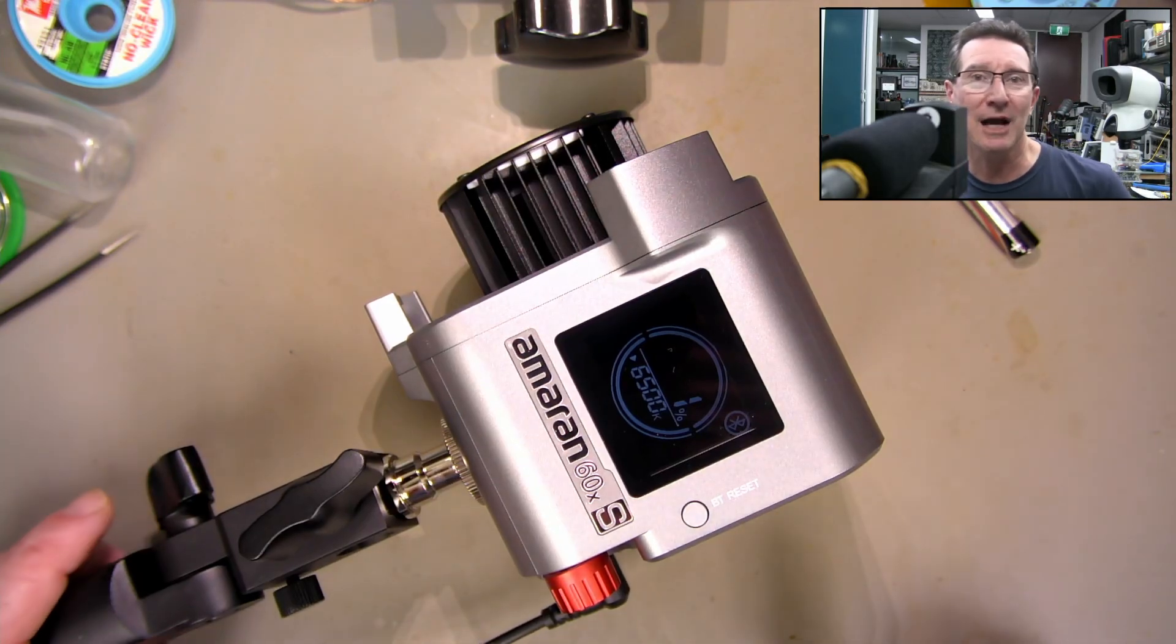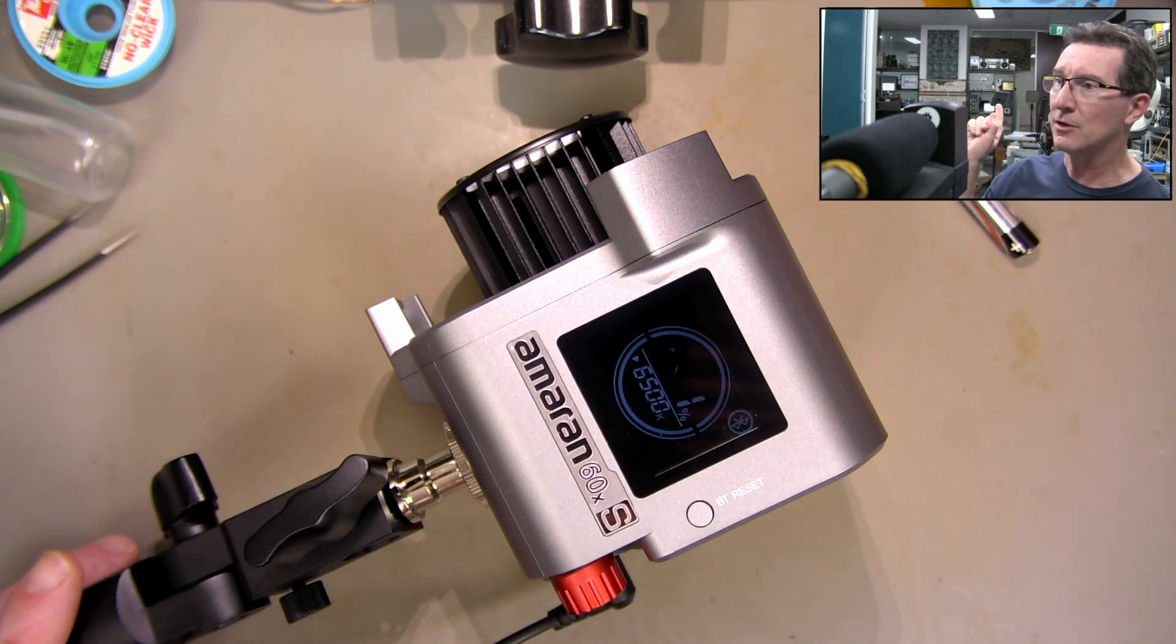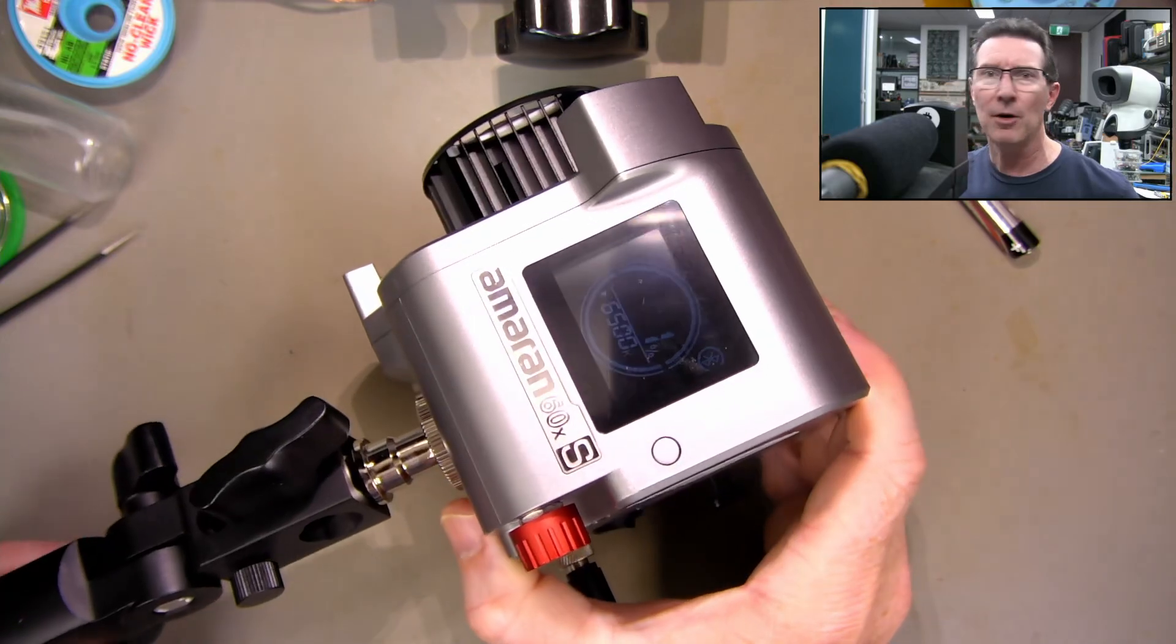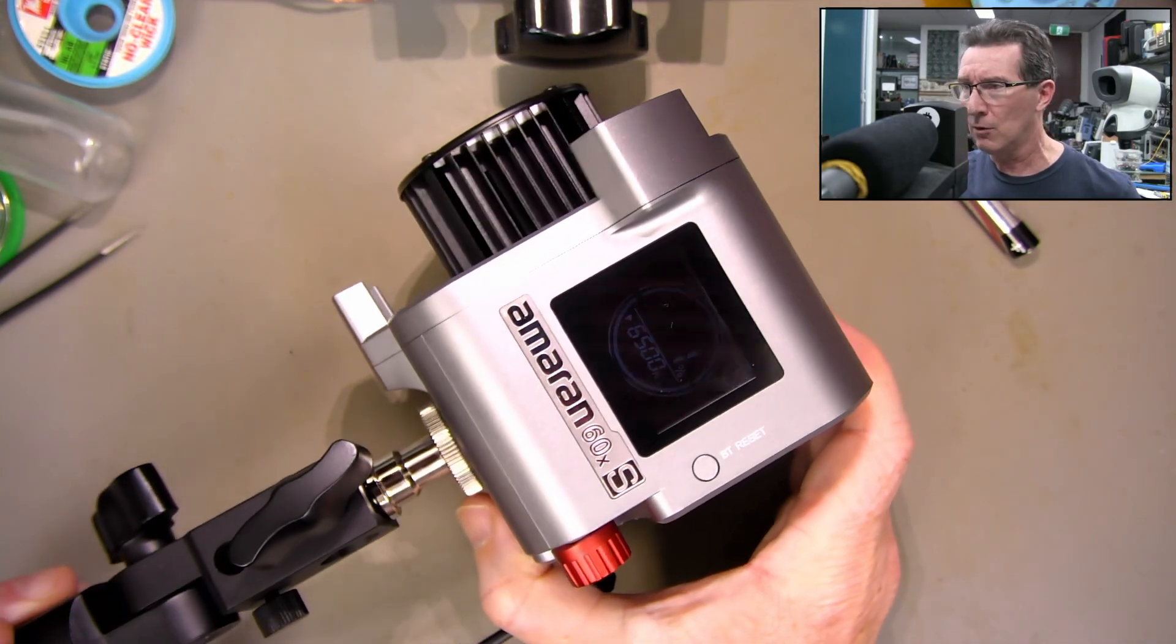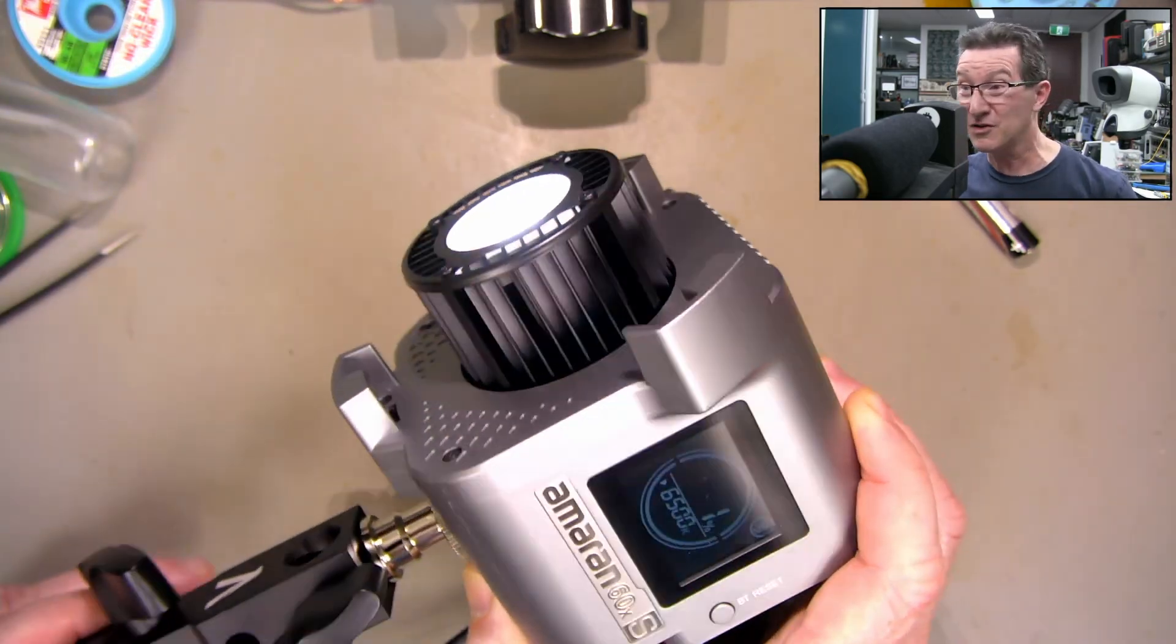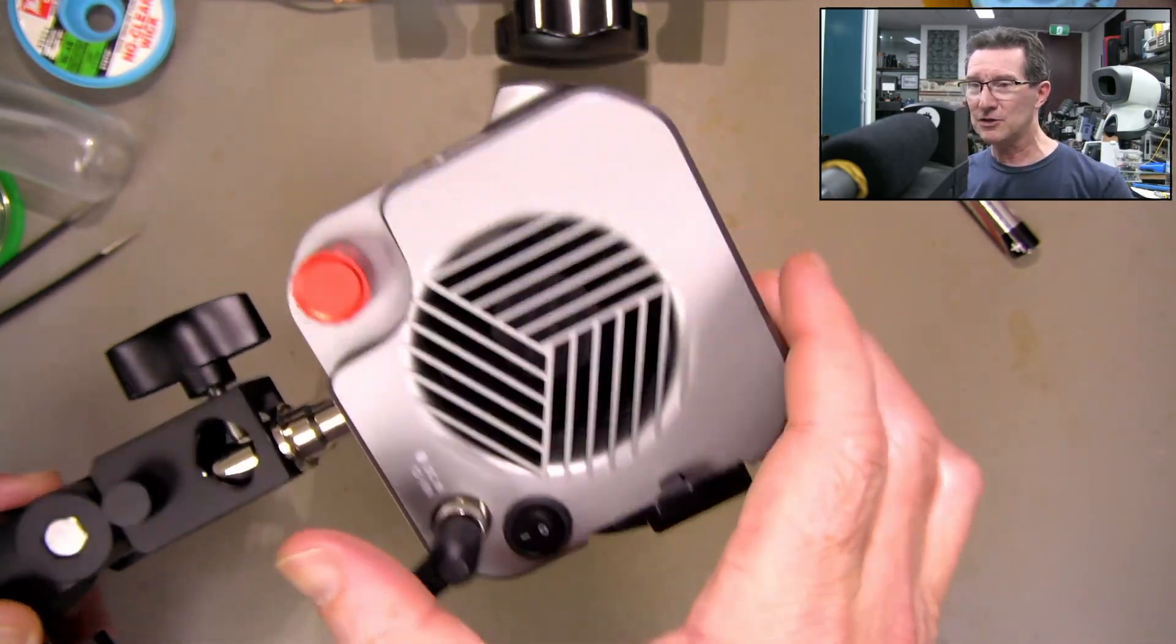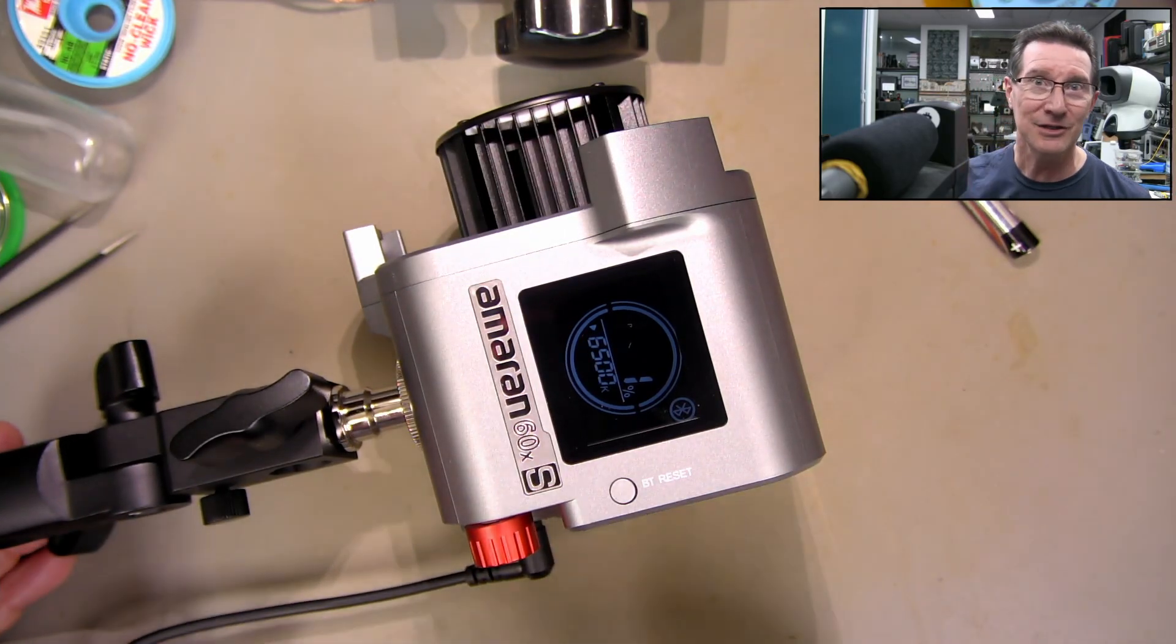I think my original HR672Cs, which you can see in the background there, those ones on the stands there, I think I might have got them secondhand or something. But yeah, I think they were originally more, or the same price, or more expensive than this bad boy. And with the Bowens mount, you can put all sorts of softboxes and filters and all sorts of stuff on there. So there you go. I thought I'd just show you that under the microscope. If you like that, give it a thumbs up. Catch you next time.